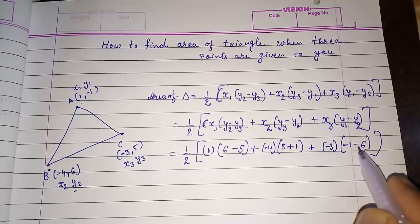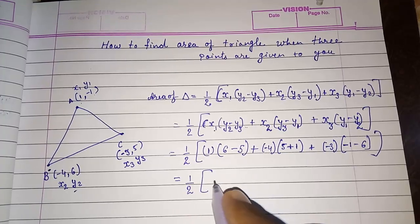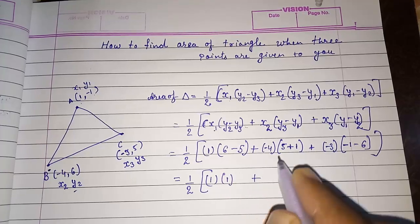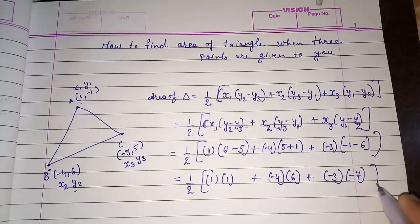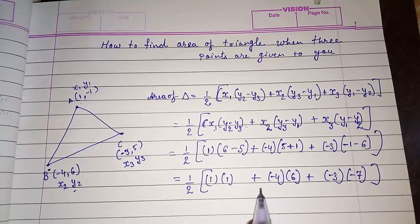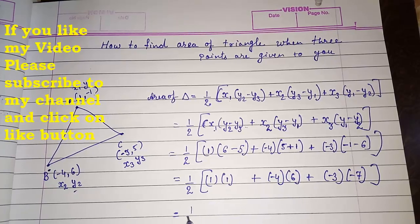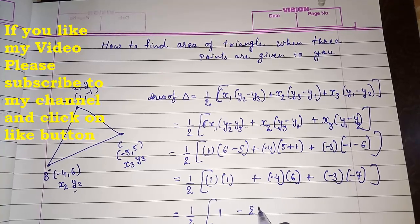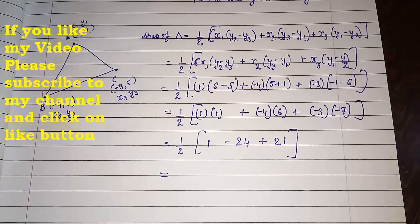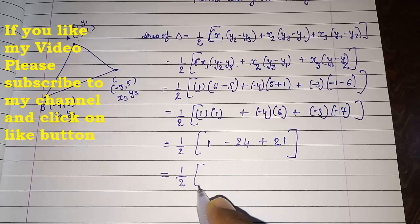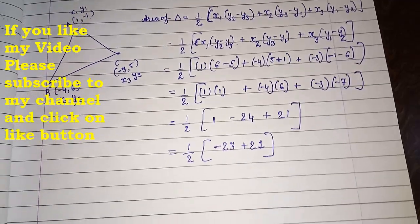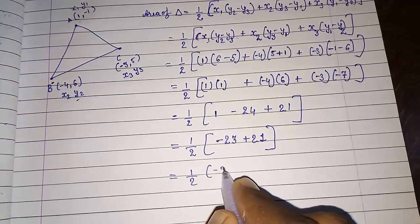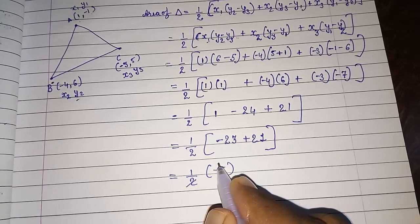Be careful while writing this. One-half times: 1 multiplied by (6 minus 5) = 1, plus minus 4 multiplied by (5 plus 1) = minus 24, plus minus 3 multiplied by (minus 1 minus 6) = plus 21. Now adding: 1 minus 24 plus 21 = minus 23 plus 21 = minus 2. So it is one-half into minus 2, which gives minus 1.